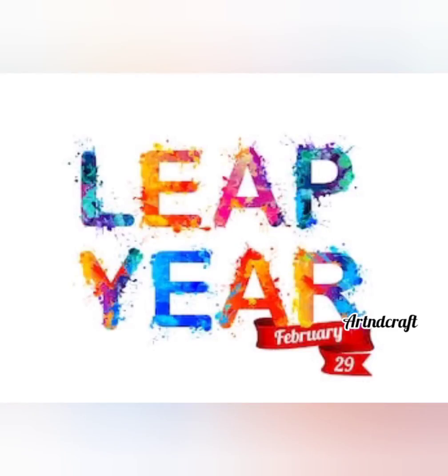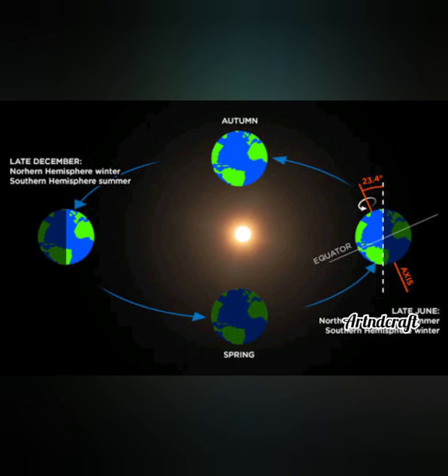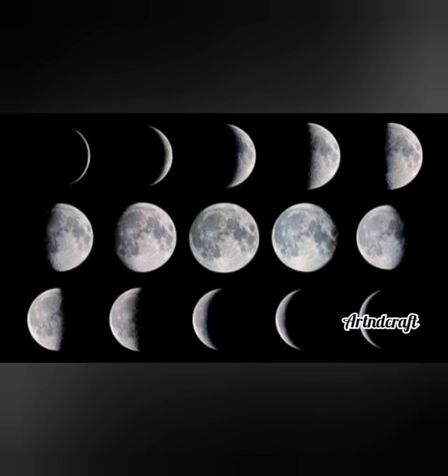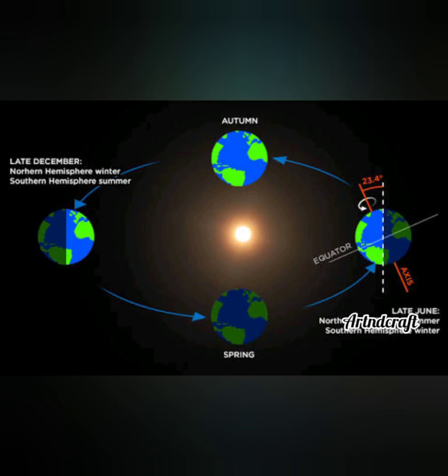Let us find an answer to this exciting question that comes once in four years — why do we have leap years? As we are all aware, the earth revolves around the sun in orbit, and the period it takes to finish the revolution is considered a year. We think the time taken to complete this circle is 365 days, but in reality the earth takes around 365.25 days, which counts to an extra 6 hours. We add those extra 6 hours four times to create a once-in-four-year phenomenon called the leap year.